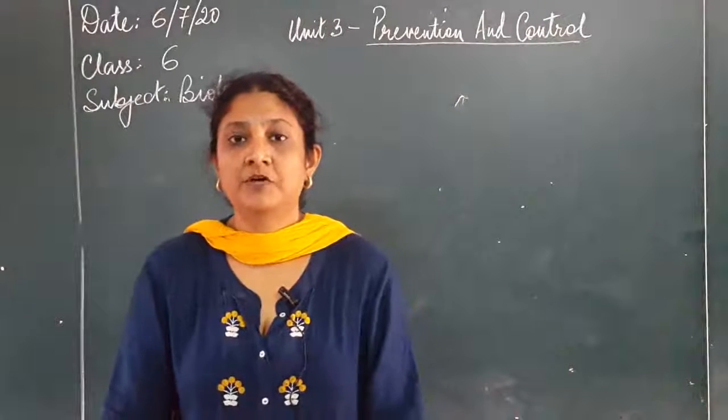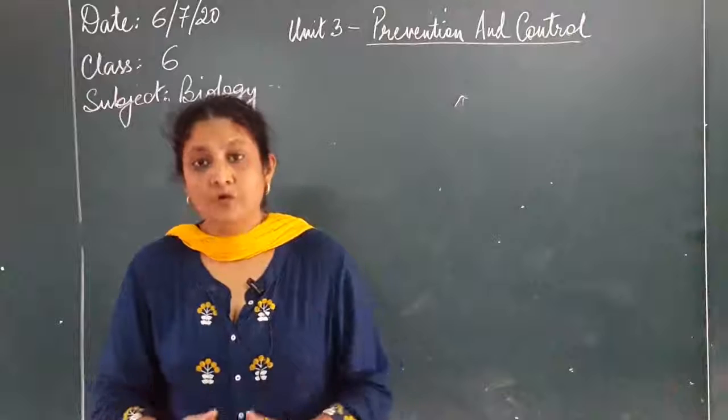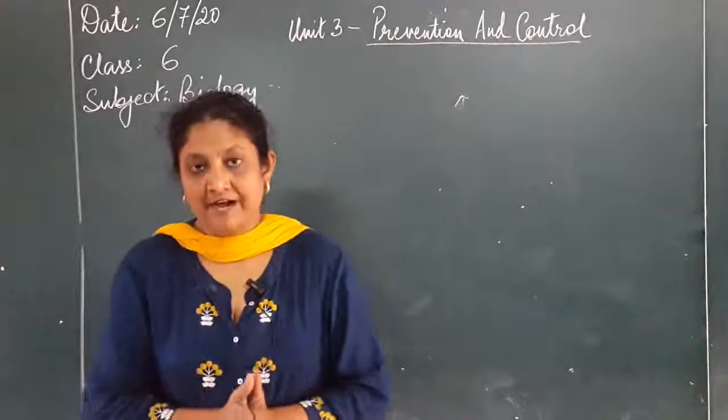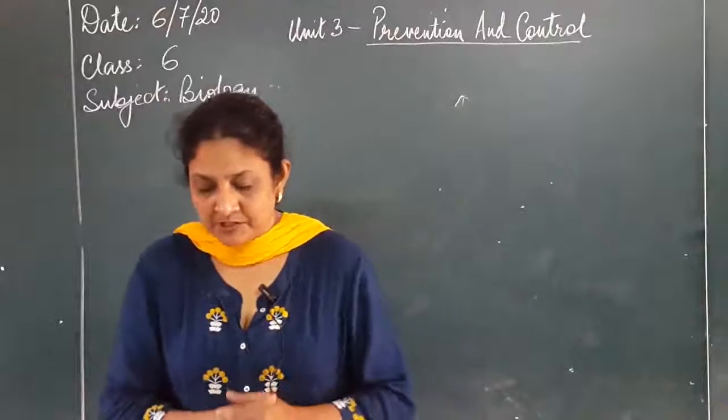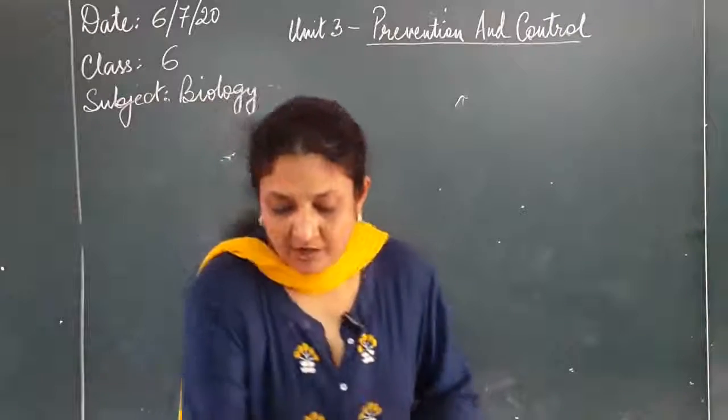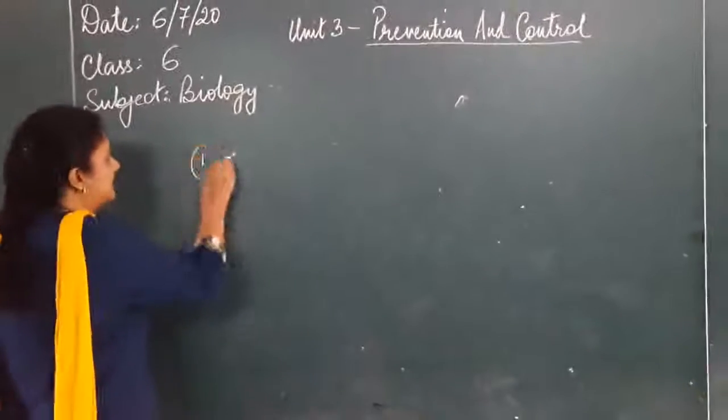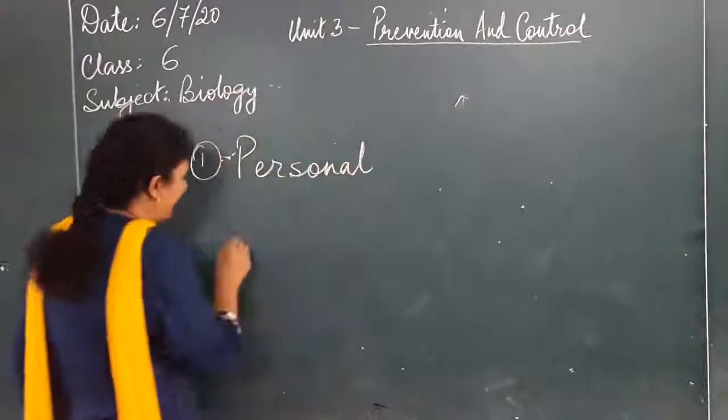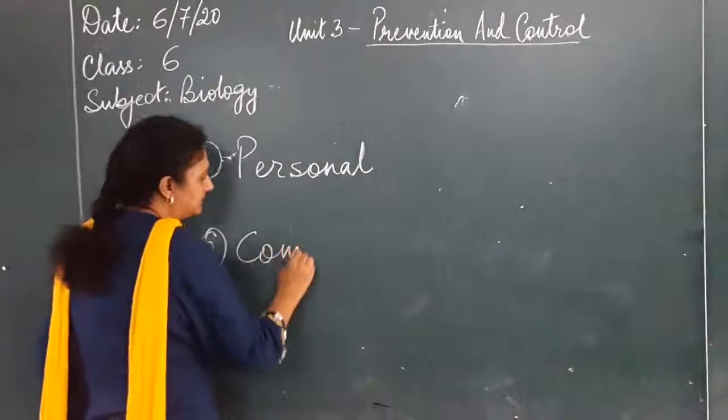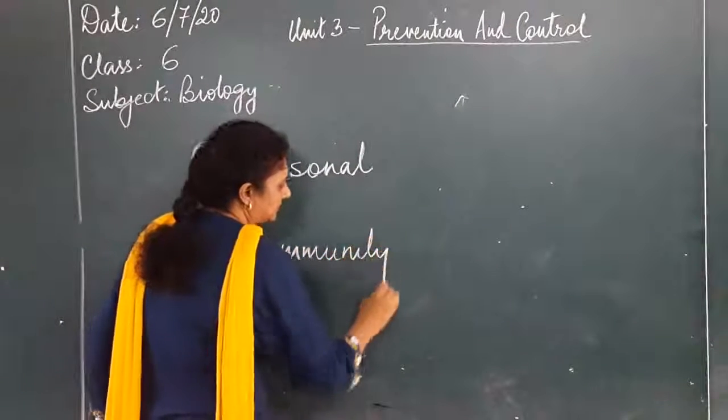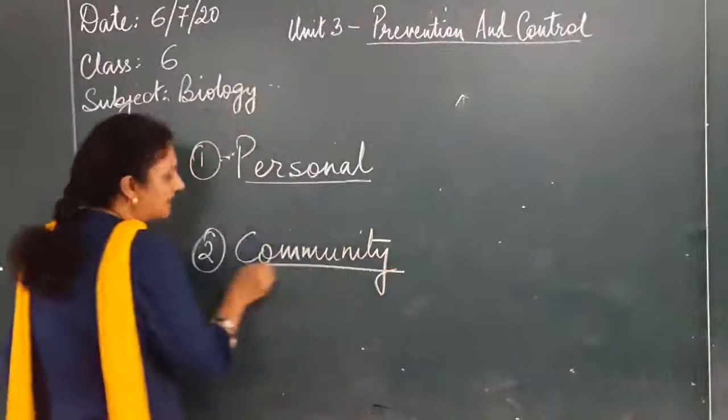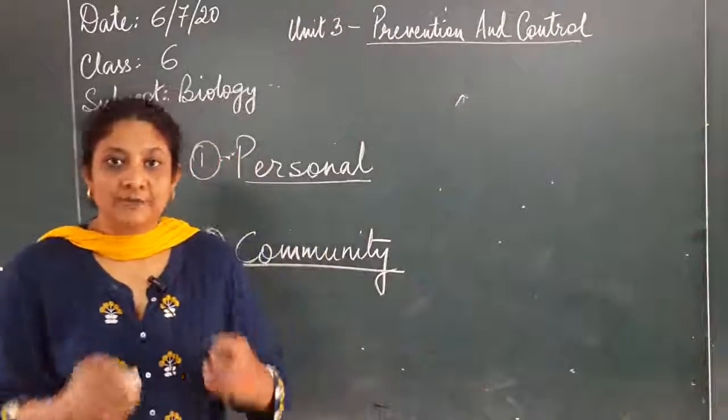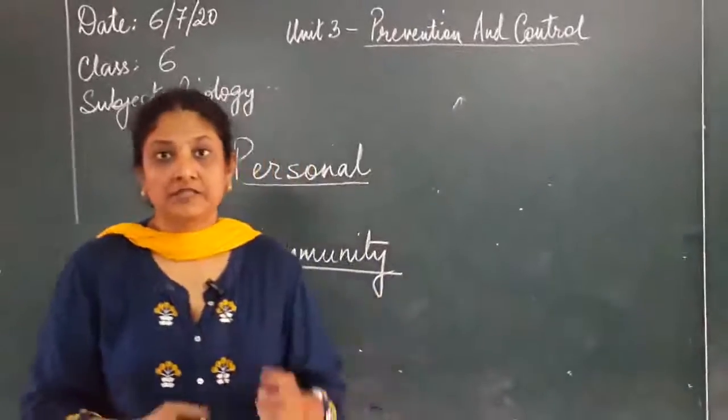In this portion we are going to learn about how to prevent or control diseases. To control or prevent, we have certain principles we have to follow on two bases: one is personal level and the second is community level. These are the two levels we are going to use to keep ourselves protected or control the disease.